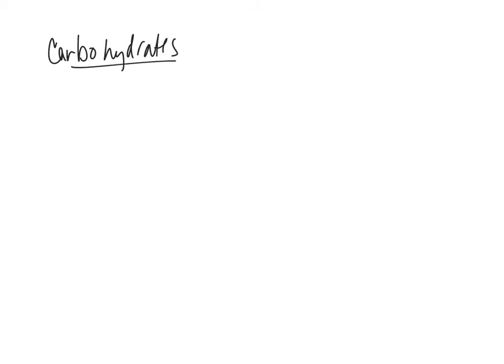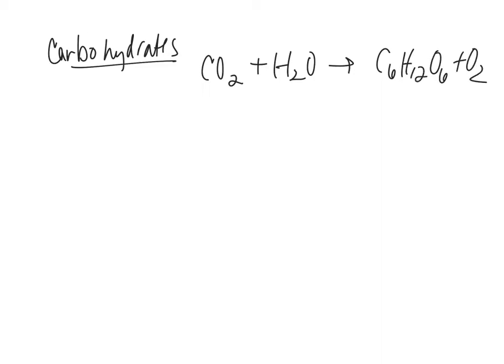Today's lesson is on carbohydrates. You've probably heard of carbohydrates in your diet. They are synthesized by plants using sunlight to convert CO2 and water into glucose — C6H12O6 plus oxygen. To balance this, we have six carbons, 12 oxygens, 12 hydrogens, and 18 oxygens total. That is the photosynthesis equation to make carbohydrates.